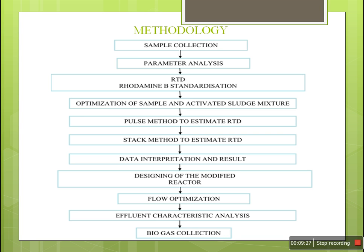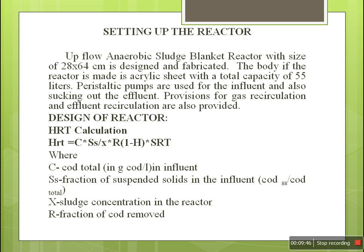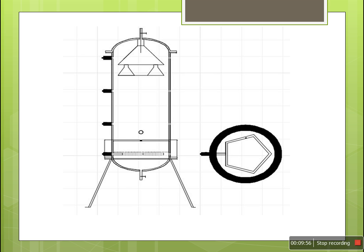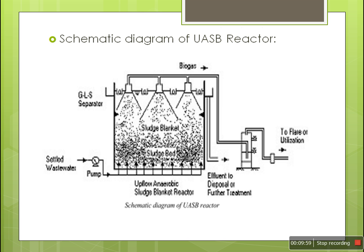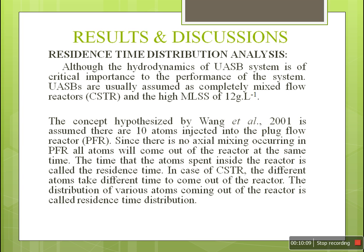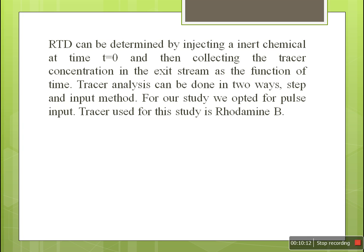The methodology includes: sample collection, parameter analysis, RTD, rhodamine B standardization, optimization of sample and activated sludge mixture, pulse method to estimate RTD, stack method, design of the reactor, and biogas collection. Setting up the reactor is done using the volume of the reactor and the amount of inflow. This covers the lab-scale biogas production setup, the autoclave diagram, and the schematic diagram. RTD is done by using tracer analysis using rhodamine B; injecting at a spontaneous point indicates what type of reactor is found.